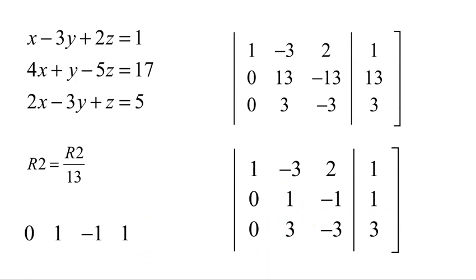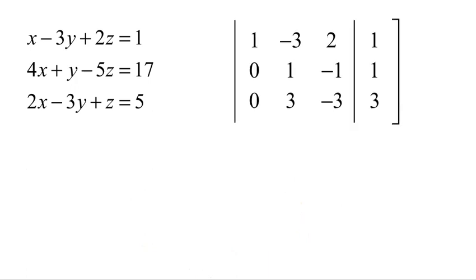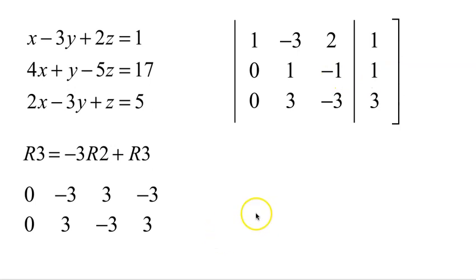Negative 3 times row 2: negative 3 times 0 is 0, negative 3 times 1 is negative 3, negative 3 times negative 1 is positive 3, negative 3 times 1 is negative 3. Add that to row 3 and notice what happens: 0 plus 0 is 0, negative 3 plus 3 is 0, 3 minus 3 is 0, negative 3 plus 3 is 0.